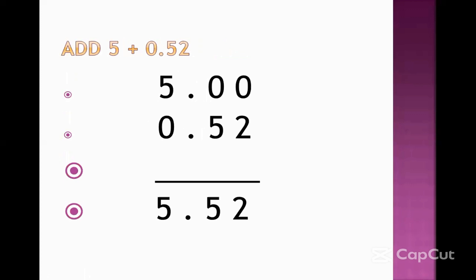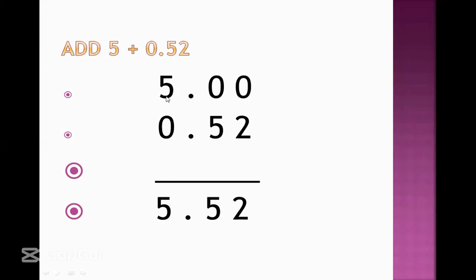Now we have another example which is a combination of a whole number and a decimal number. The number 5 is a whole number because it does not have a point. The number 0.52 is a decimal number because it has a point. First, we write the whole number 5, then we look at 0.52 — after the point it has two digits.